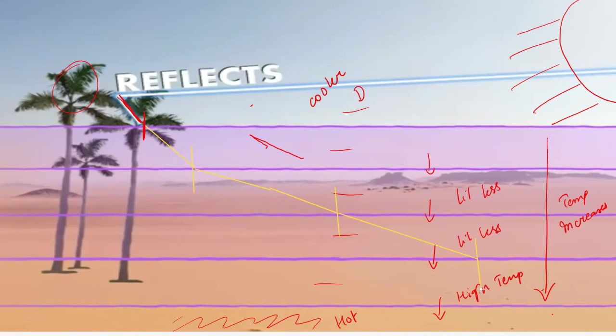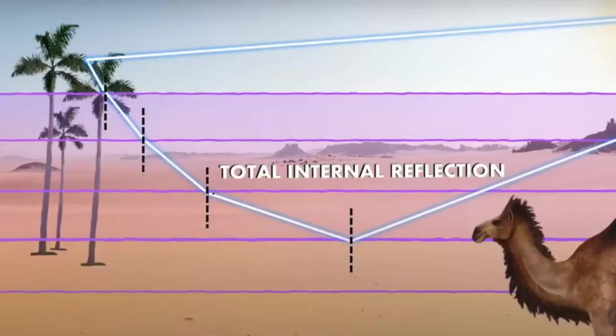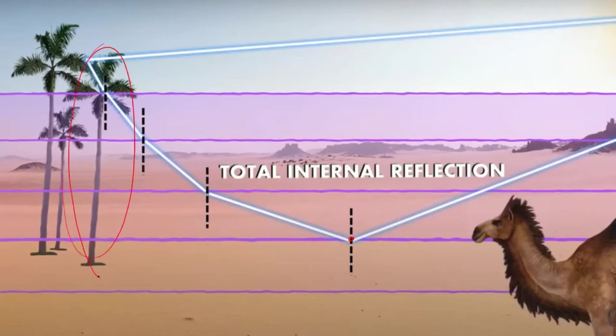That means we are talking about total internal reflection. The light ray is bending away from the normal, and at one point the angle of incidence becomes so large that the refracted angle is 90 degrees — it goes beyond 90 degrees. The angle of incidence becomes greater than the critical angle, so total internal reflection takes place. When total internal reflection takes place, the entire image of the tree, which we see here, can be seen down below.